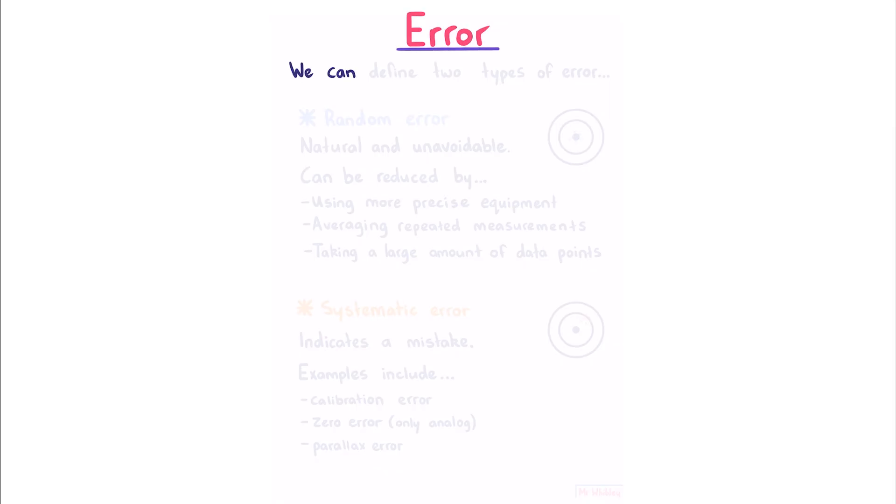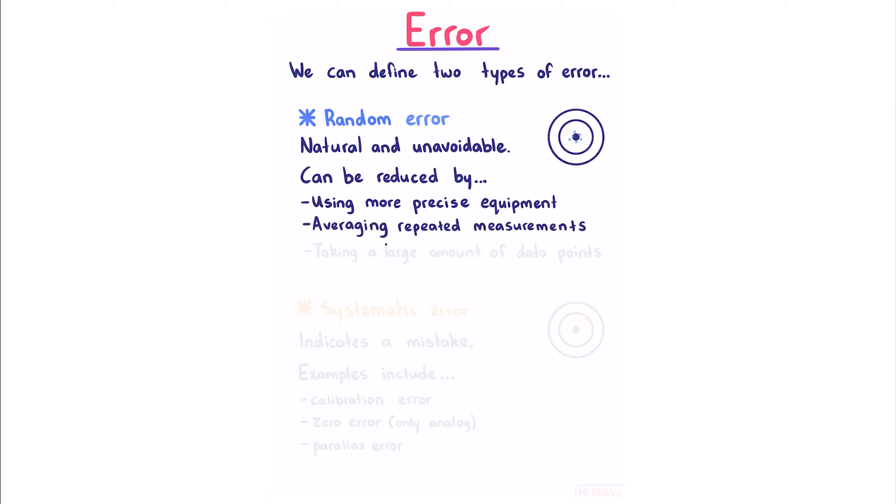Error. We can define two types of error. Random error, which is natural and unavoidable, and can be reduced by using more precise equipment, averaging repeated measurements, or by taking a large amount of data points.